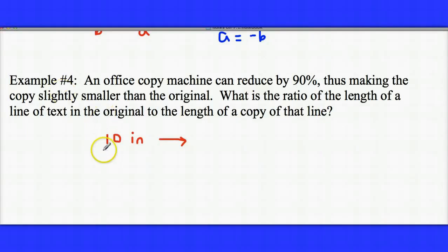So in other words, let's say our original was 10 inches long. That means the copy would now be 90% of the original, so that would be 9 inches long. And the question is, what is the ratio of the original to the copy? So that would be 10 to 9.